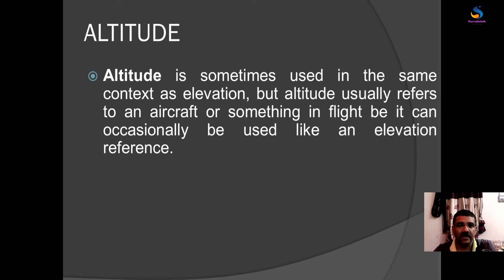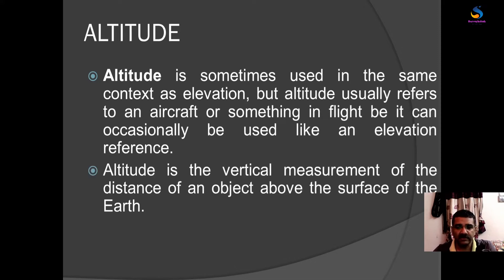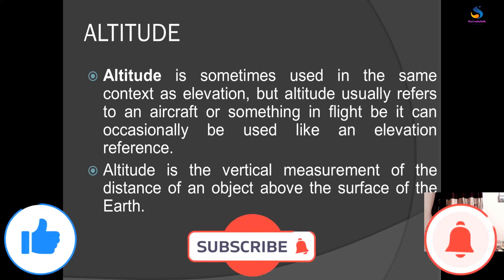Now, altitude. Altitude is sometimes used in the same context as elevation, but altitude usually refers to an aircraft or something in flight, though it can occasionally be used like an elevation reference. In other words, altitude is the vertical measurement of the distance of an object above the surface of the earth.